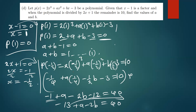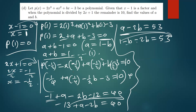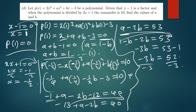Now we solve simultaneously using a + b = 1 and a - 2b = 53. From the first equation, a = 1 - b. Substituting into a - 2b = 53: (1 - b) - 2b = 53, giving 1 - 3b = 53, so -3b = 52. Dividing by -3, b = -52/3.